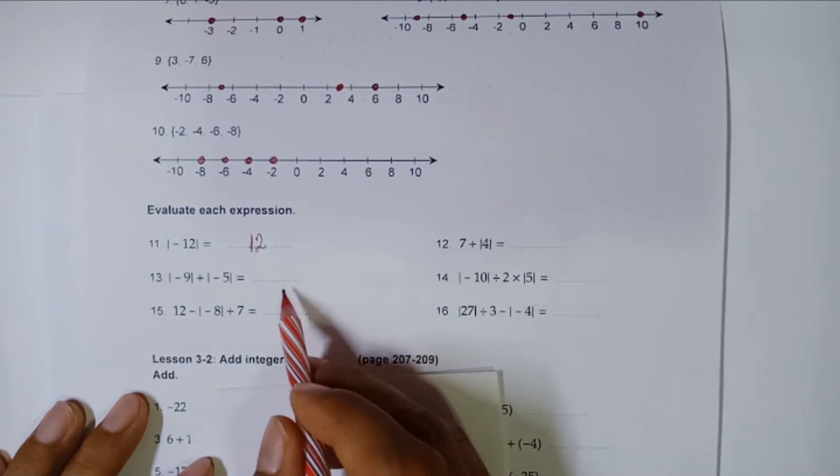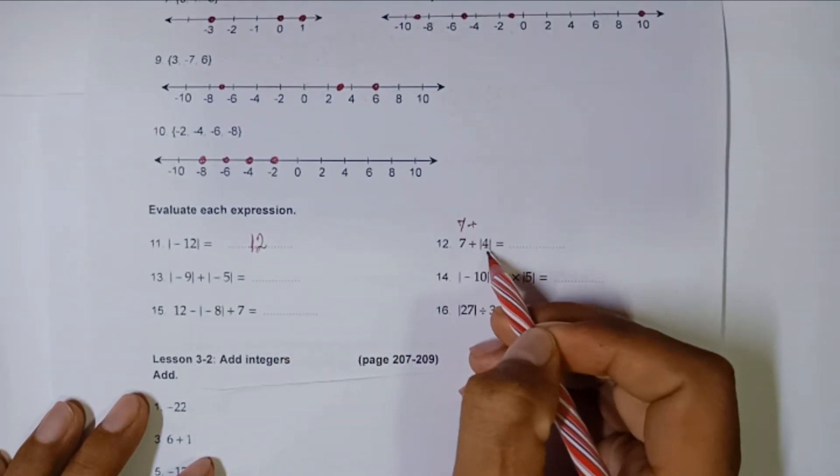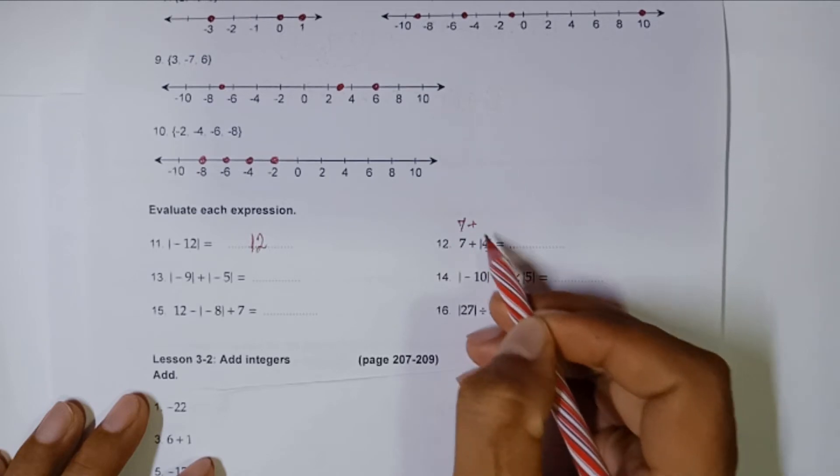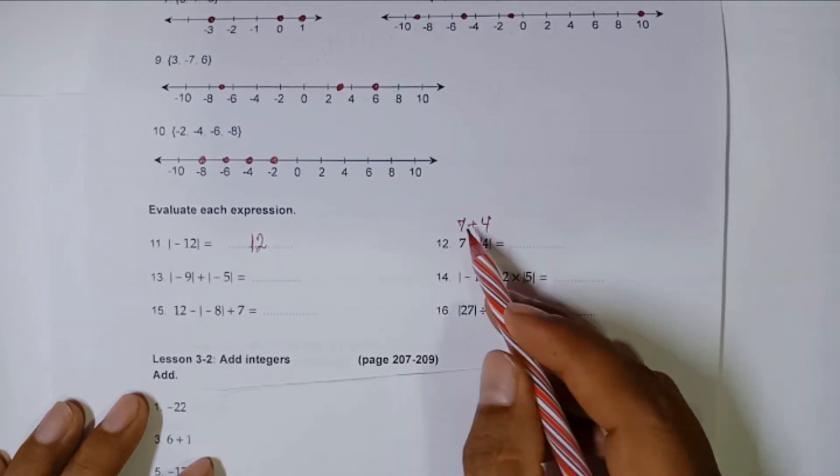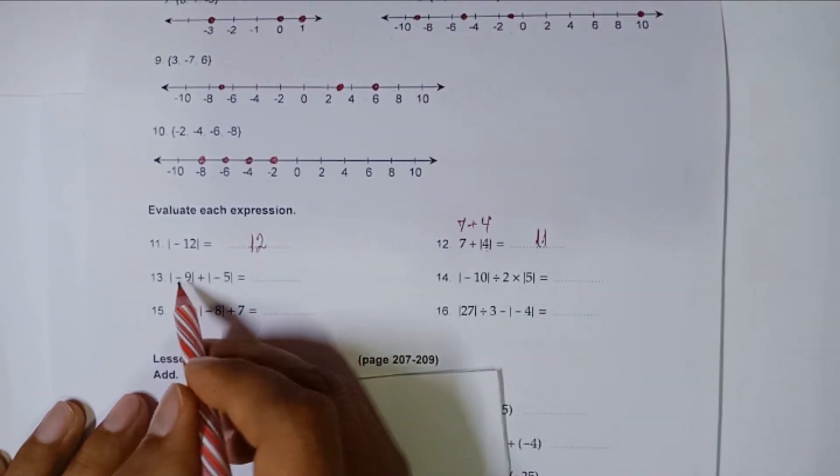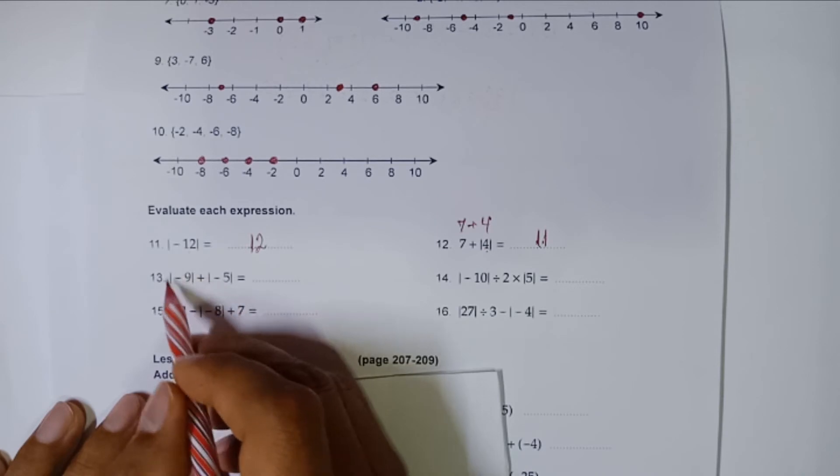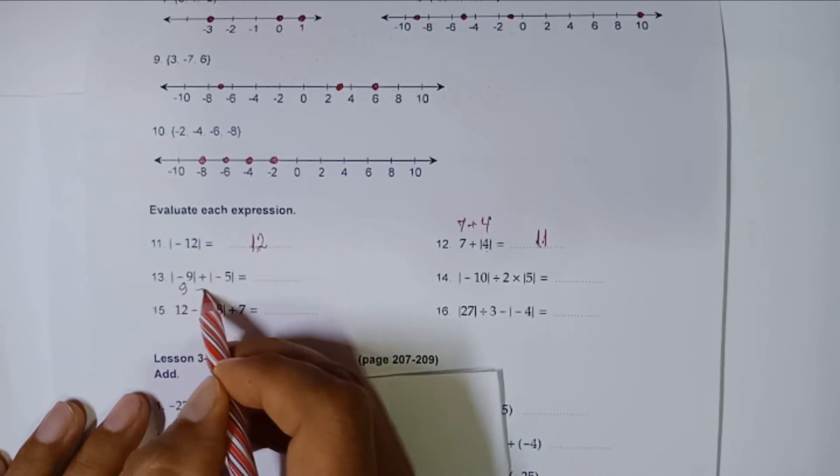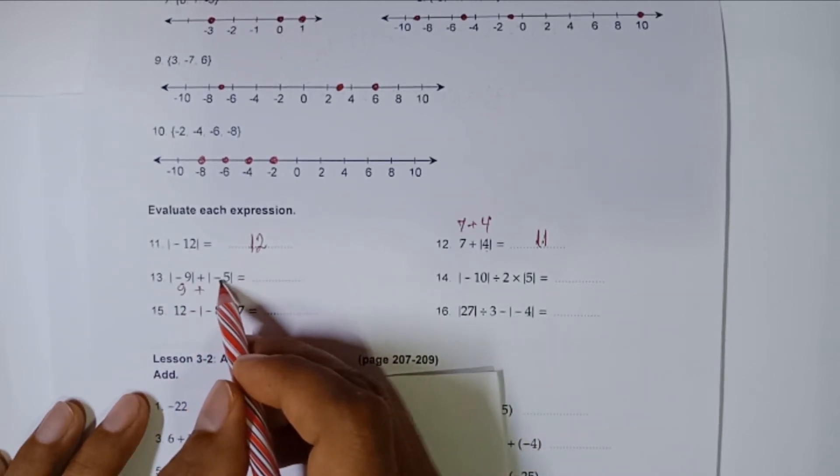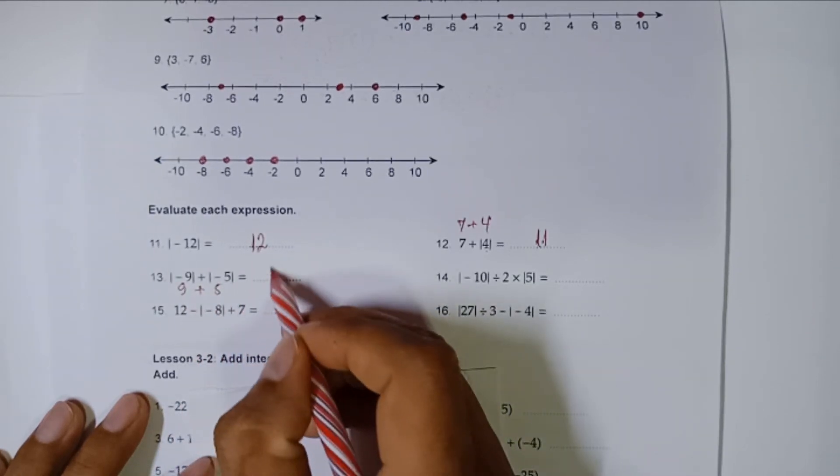This one right here, let's work on number seven first. Seven plus four inside absolute value will yield four. Seven plus four, eleven. Number thirteen: negative nine, but within this absolute value it will become nine. Nine plus negative five will become five, so nine plus five, fourteen.